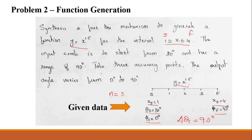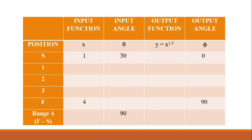We will represent the given data in a table with columns for the input function, input angle, output function, and output angle. The positions are starting and final, with three accuracy points (n = 3) in between. The starting value of x is 1 and the final value is 4. The starting input angle is 30 degrees, the output function is y = x^1.5, and the output angle varies from 0 to 90 degrees.